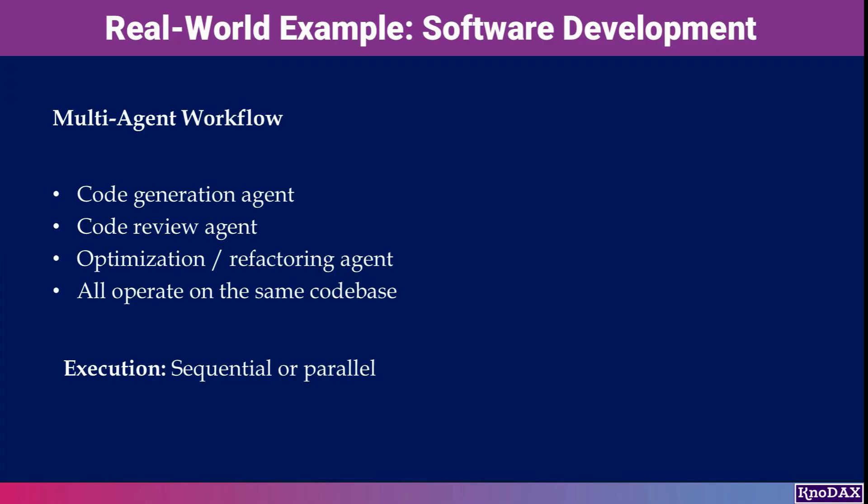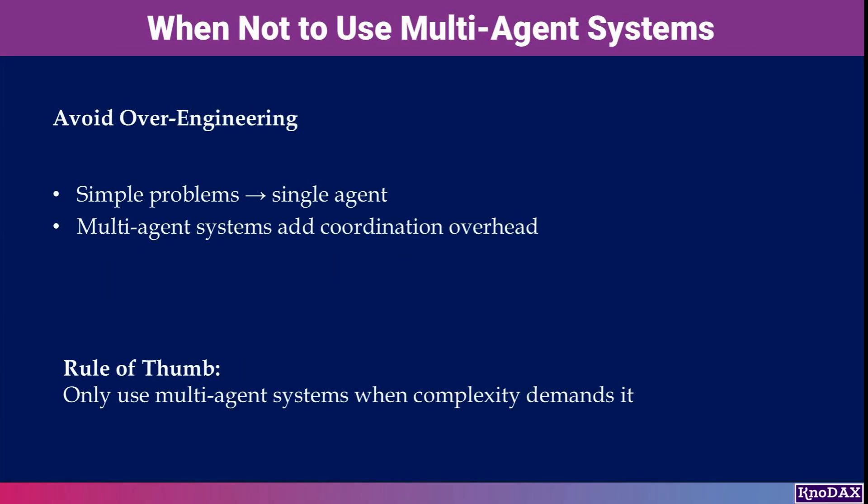These agents can operate on the same codebase either sequentially or in parallel. An important rule of thumb applies here: if your use case is simple, don't over-engineer it. Multi-agent systems add coordination overhead, so they're most valuable only when the problem itself is genuinely complex.